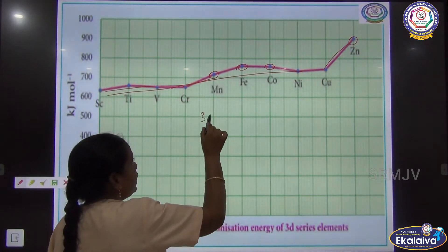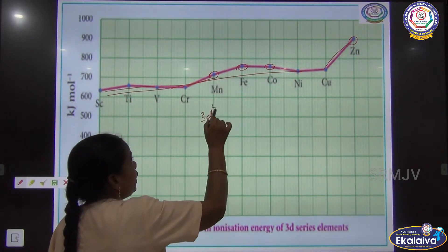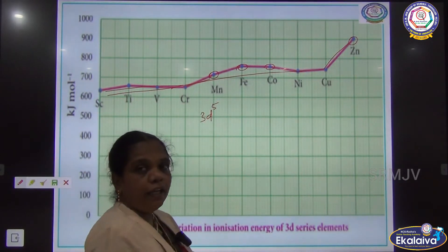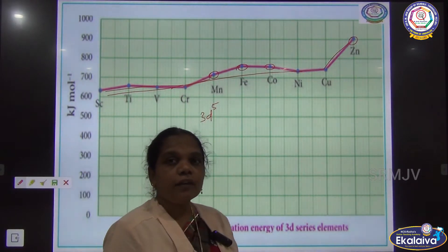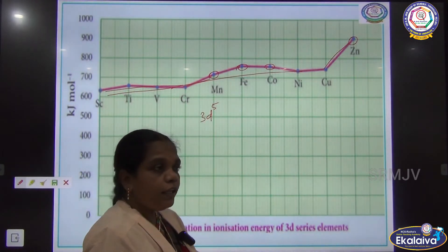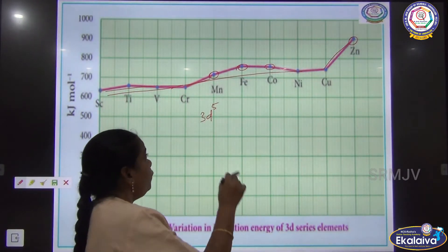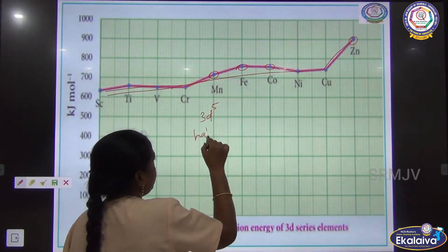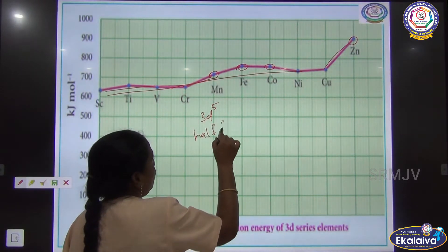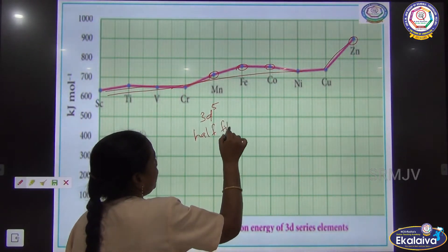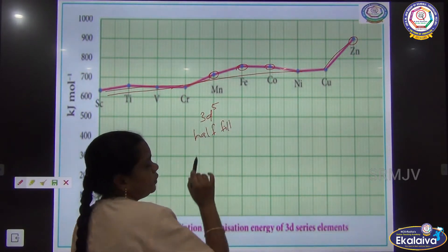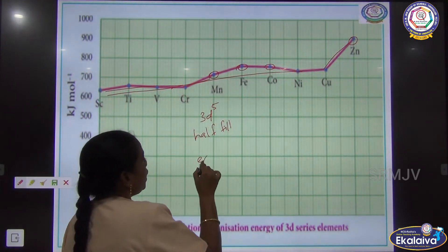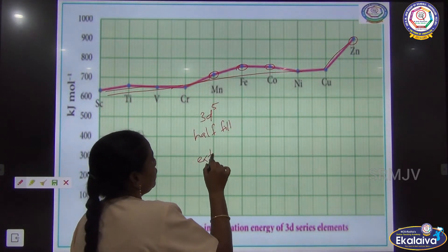Manganese has 3D five electrons — a half-filled 3D orbital configuration. This half-filled configuration is going to show extra stability.